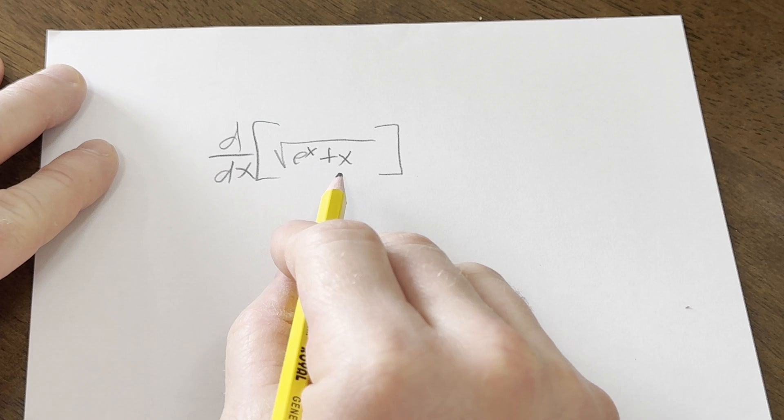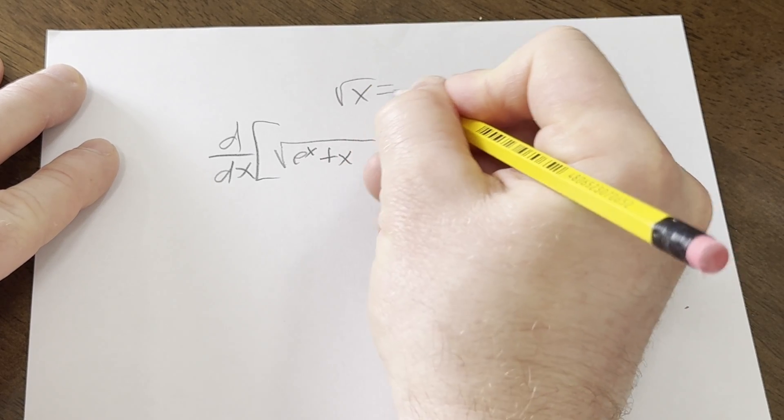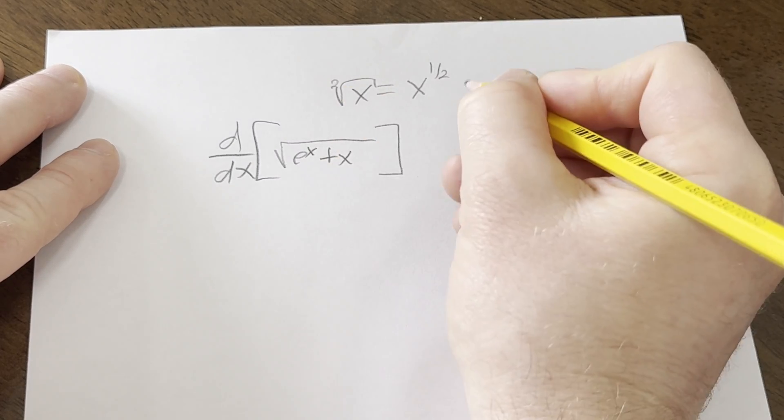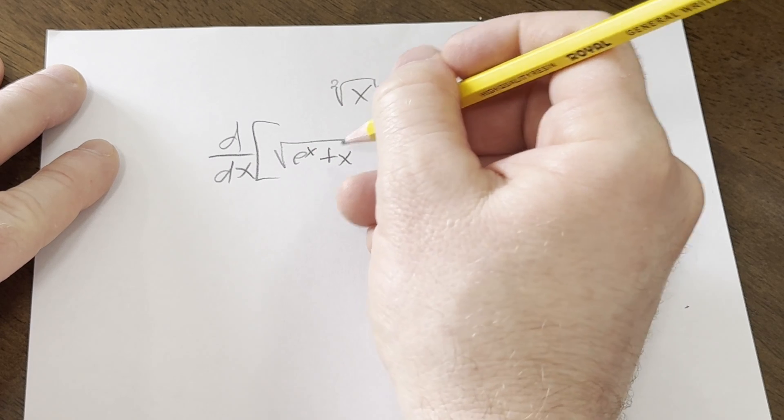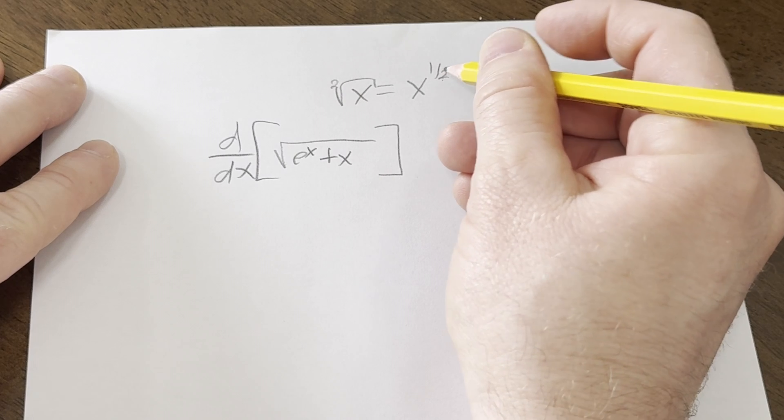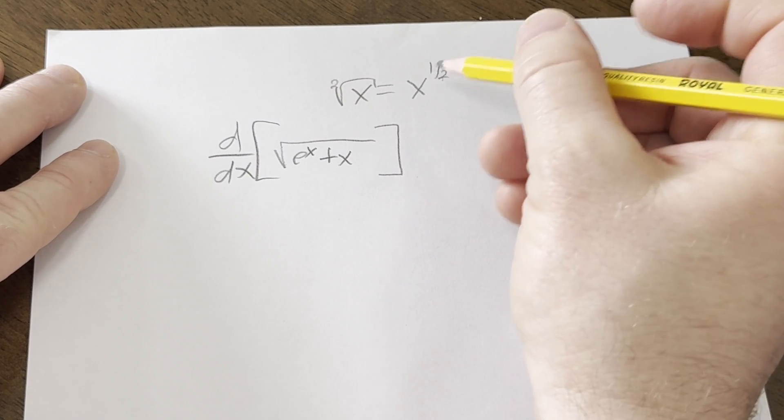So whenever you have a square root function, you can write it in another way. You have the square root of x, you can write this as x to the 1 over 2. And the reason I'm mentioning that is that's going to be our first step here, because whenever you're computing derivatives of root functions like this, you want to write them this way because we have something called the power rule. And the power rule allows us to take the derivative of power functions such as this one.